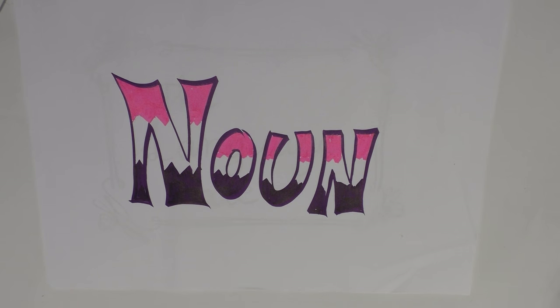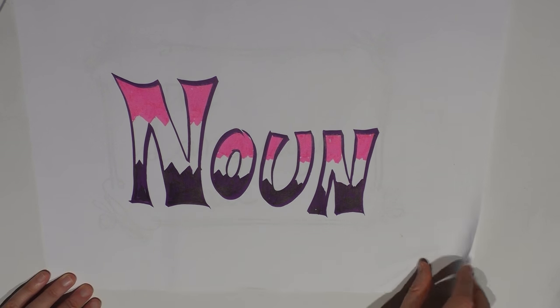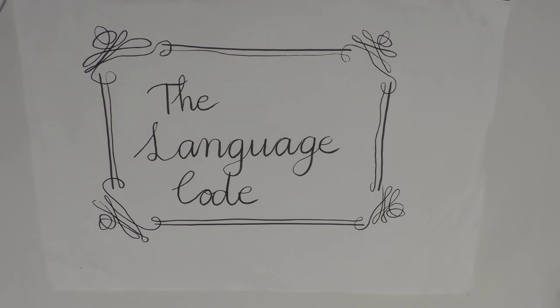And that's the distinction between inflectional and derivational morphology. And so I think we're finally ready to jump in and begin to explore our word classes in depth, and we're going to begin by looking at nouns. So until then, thanks for watching The Language Code.